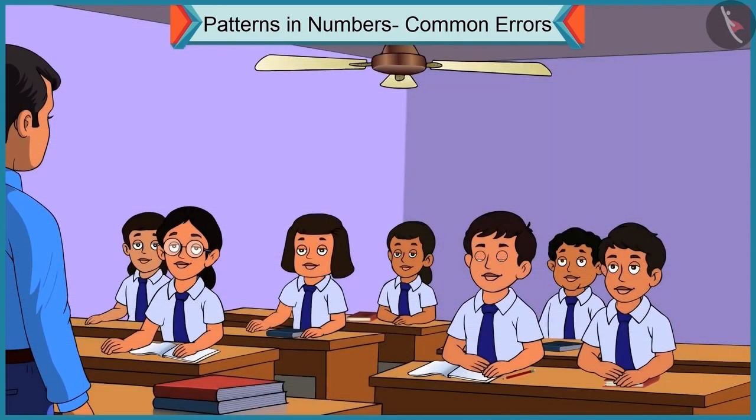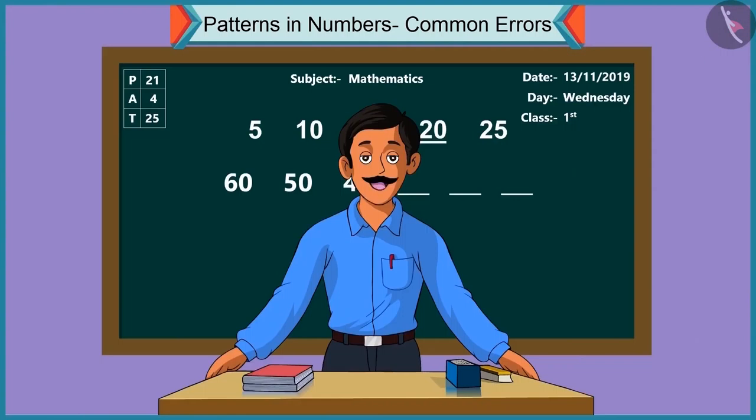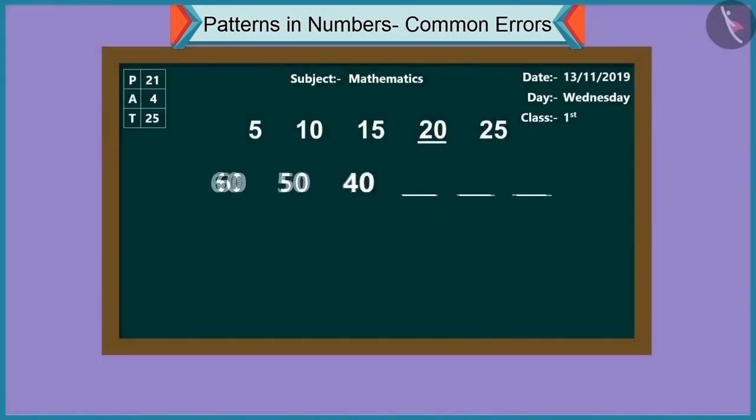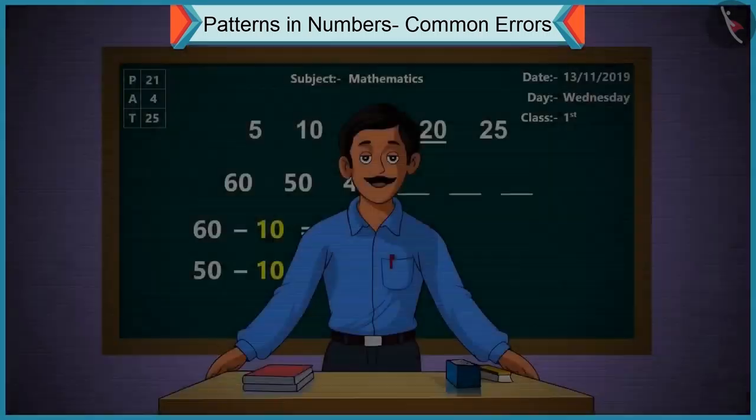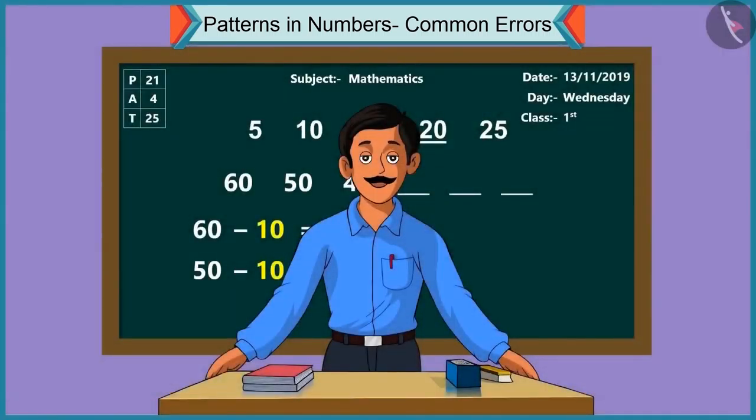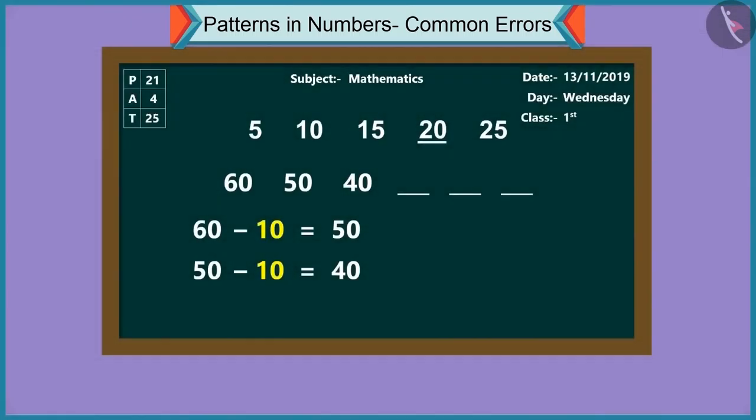Sir, what is the pattern here? Let's understand this pattern. In this pattern, subtracting ten from sixty, we get fifty. Subtracting ten from fifty, we'll get forty. Similarly, subtracting ten from forty, we'll get thirty. Can you try now?